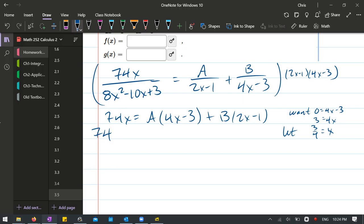Now you have an x on the left, so don't forget about that one. Now here on the right side, A times we just made this 0 with our choice, so you're going to get 0 plus B times 2 times 3/4 minus 1. Okay, so it'll reduce a little bit. We have 0 plus B times 3/2 minus 1.